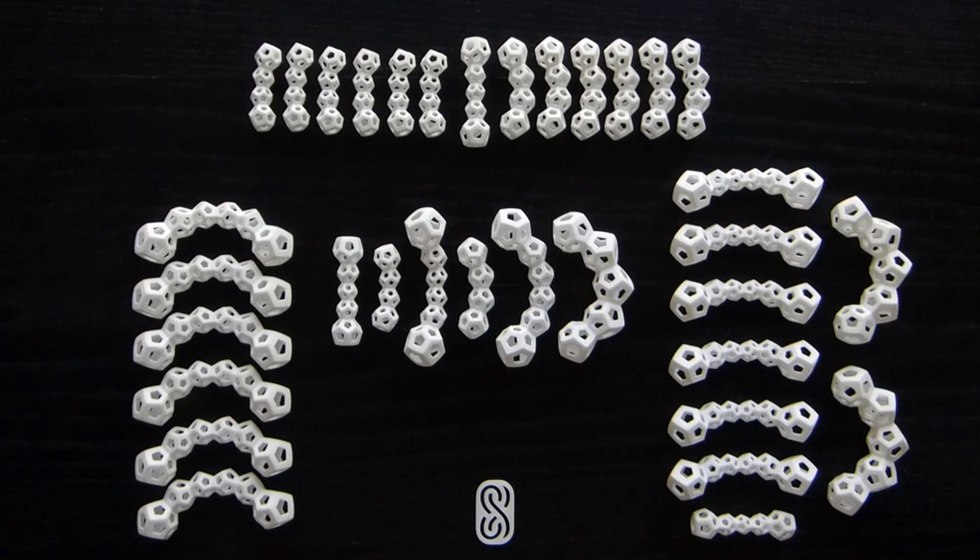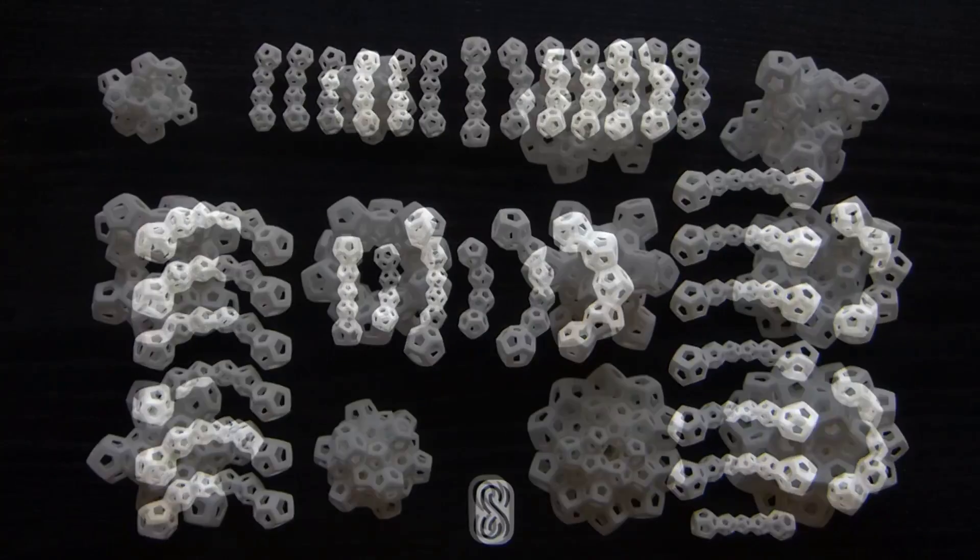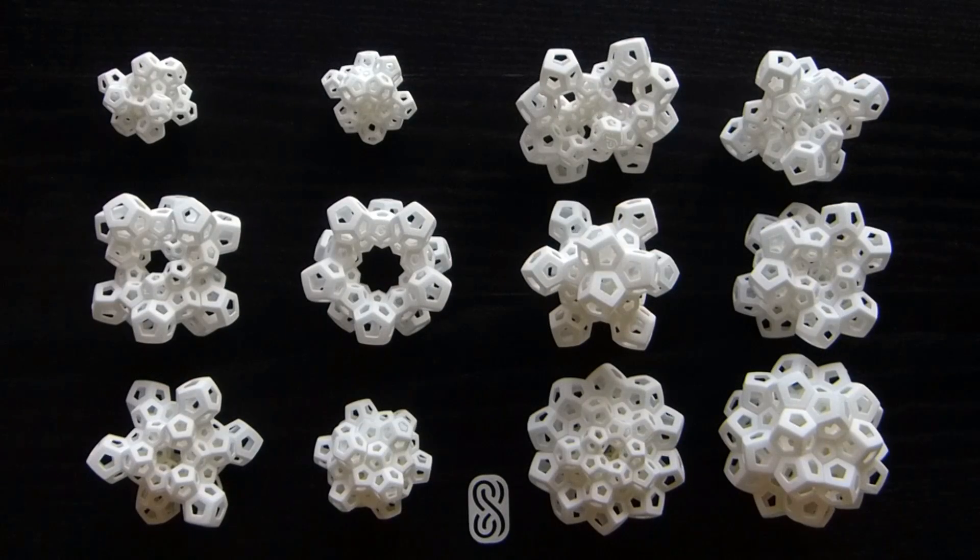With each set, you can build several puzzles, and with all three sets, you can build anything. All of these sets are available from Shapeways. The links are in the description below. There's also a link to the manual for Quintessence, describing which ribs are necessary to build which puzzles.